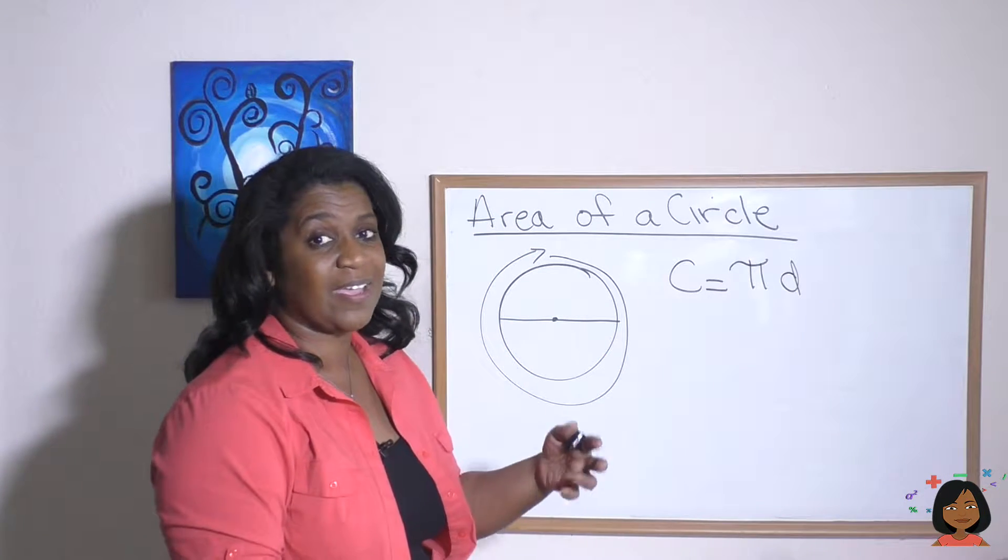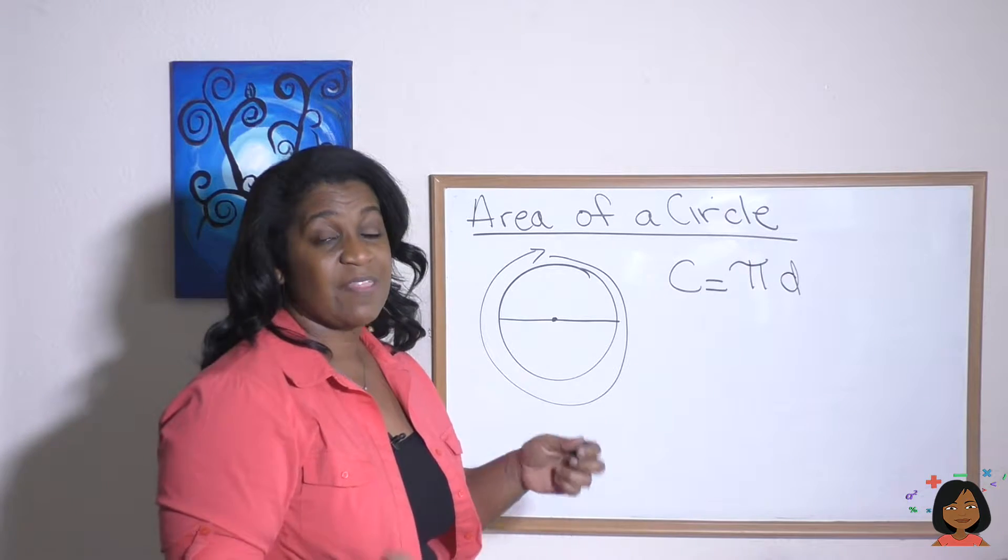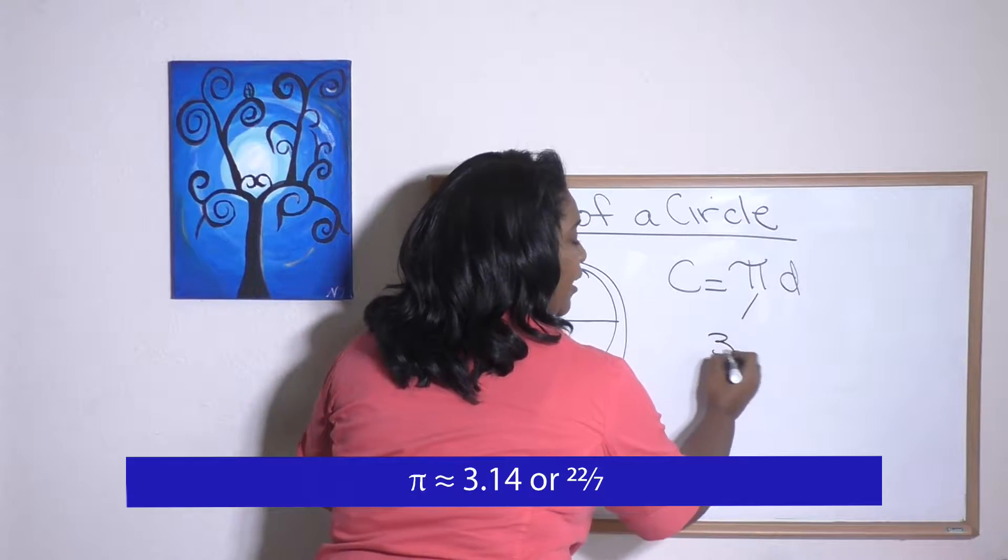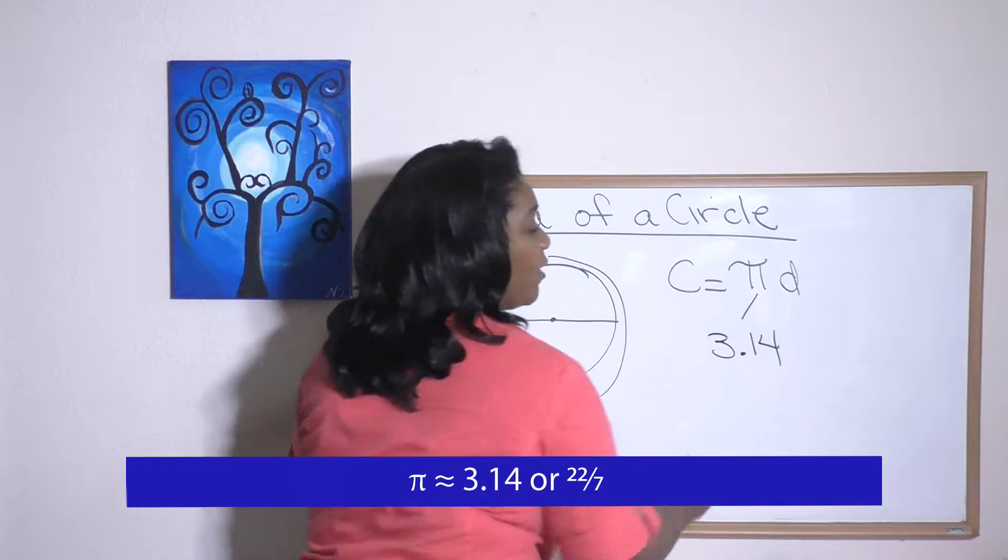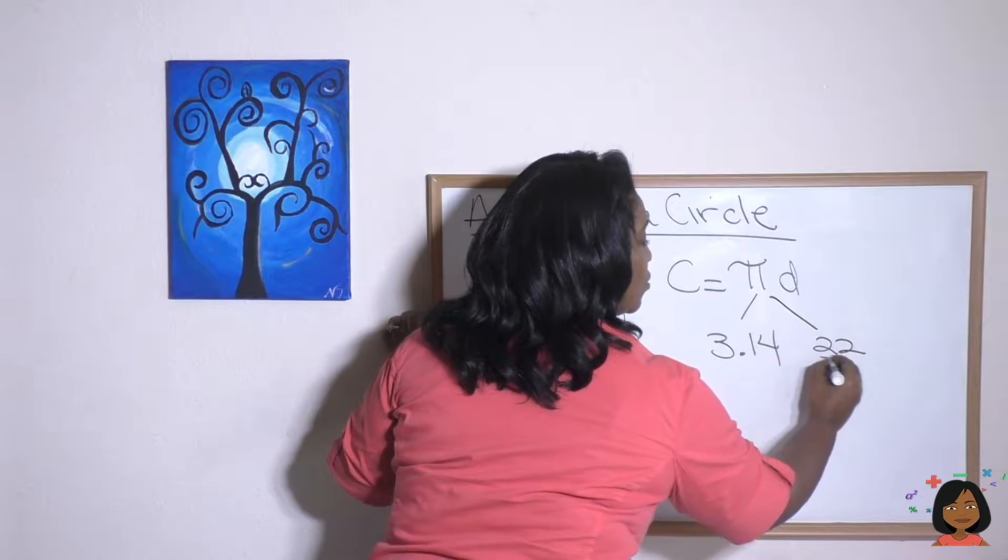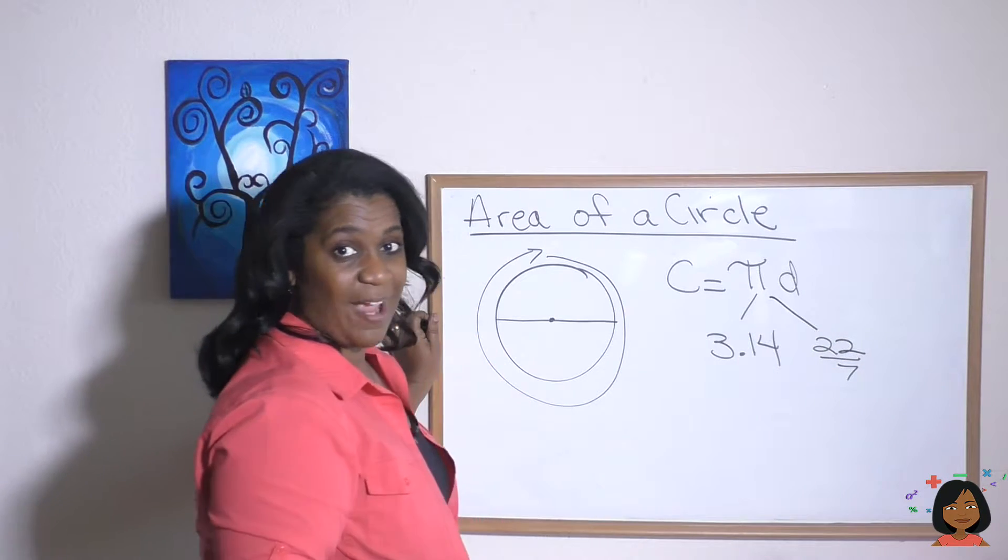You might remember that pi is a mathematical phrase that we approximate to equaling 3.14 if we're going to use it as a decimal, or we use it as 22 sevenths as a fraction.